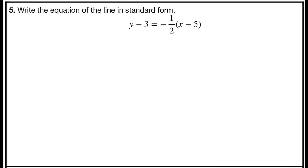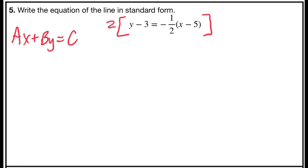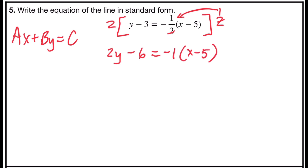Problem number 5 asks you to write the equation of the line in standard form. A, b, and c have to be integers — no fractions, no decimals. I do have a fraction of negative one-half in this point-slope form problem. So first, I'm going to clear the fractions by multiplying both sides by the least common denominator, which is 2. 2 times y is 2y, and 2 times negative 3 is negative 6. On the right side, 2 divides into 2 one time, and 1 times negative 1 times x minus 5 remains. Now I'll use the distributive property: negative 1 times x is negative x, and negative 1 times negative 5 is positive 5.